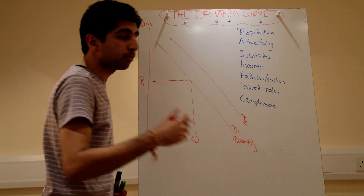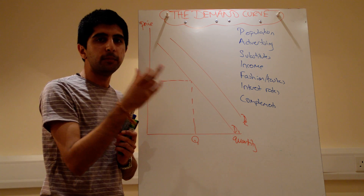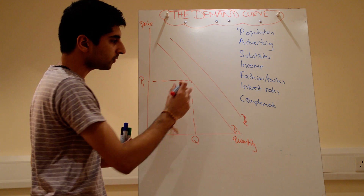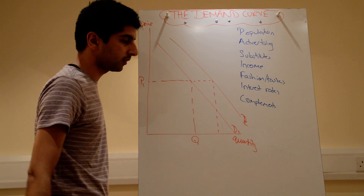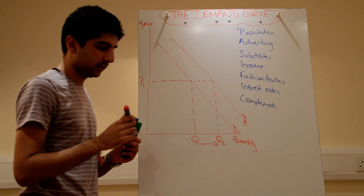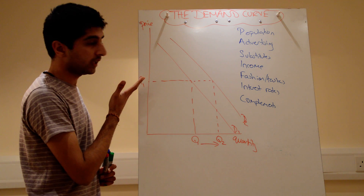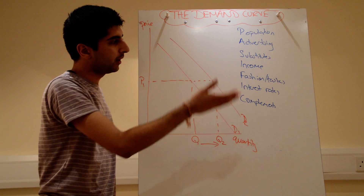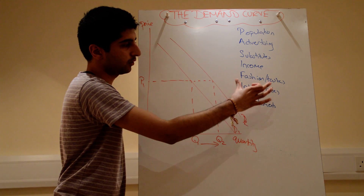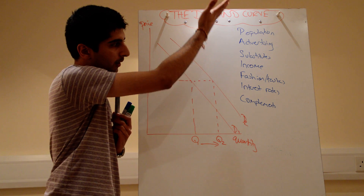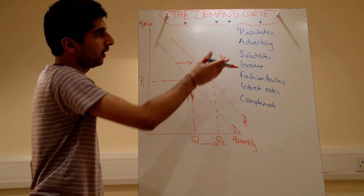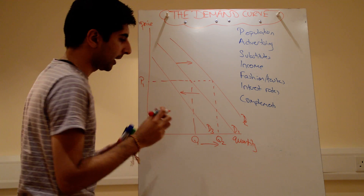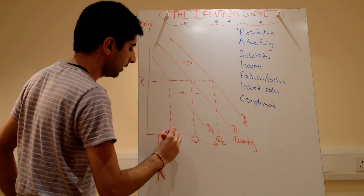This is the key difference: with price changes we move along the curve, but with these non-price determinants of demand, we shift the curve. The price stays exactly the same, yet quantity changes. An increase in population, advertising, price of substitutes, income, a new fashion, a reduction in interest rates, or a reduction in the price of complements will all shift demand to the right. Conversely, if any one of these factors reduces demand, the curve shifts to the left — at the same price, less will be demanded.